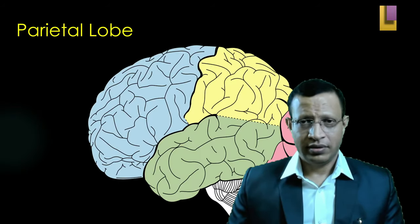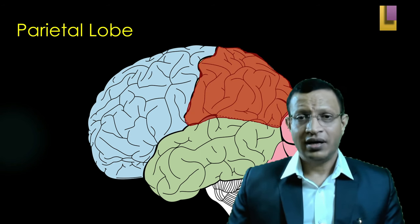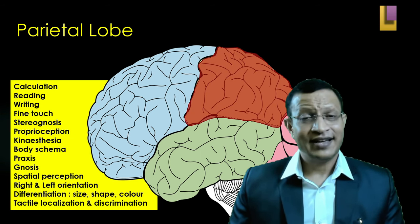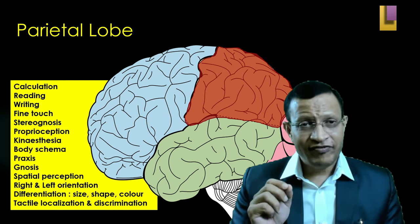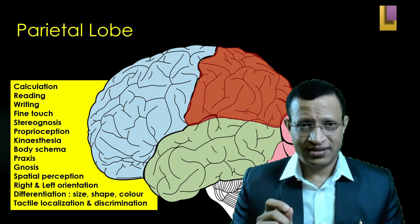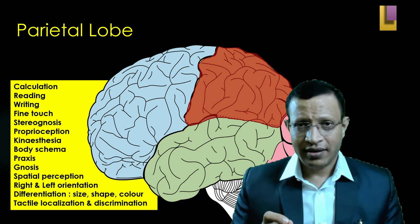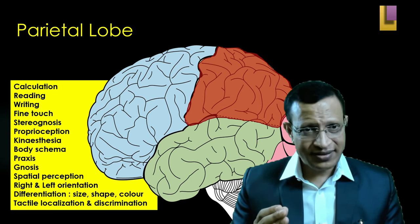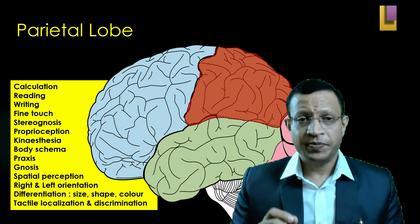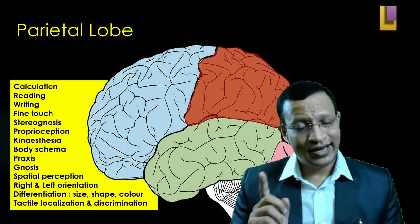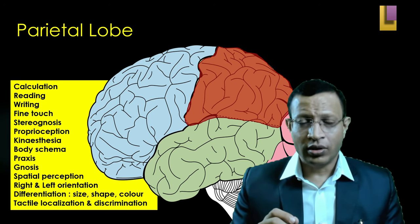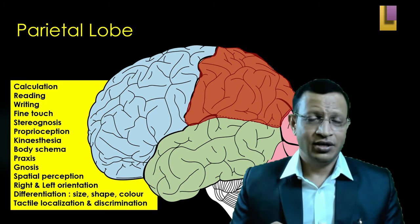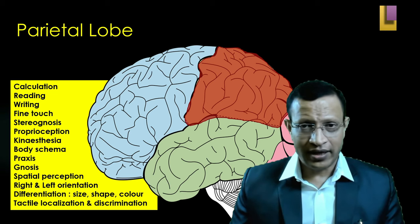Moving to parietal lobe now. The parietal lobe has very important functions: calculation, reading, writing, fine touch, stereognosis, proprioception, kinesthesia, body schema, praxis, gnosis, spatial perception, right-left orientation, differentiation in size, shape and color, and tactile localization and discrimination. These are the important functions of the parietal lobe.